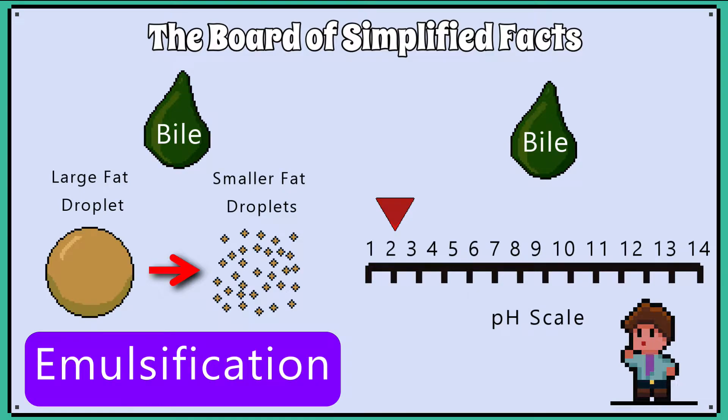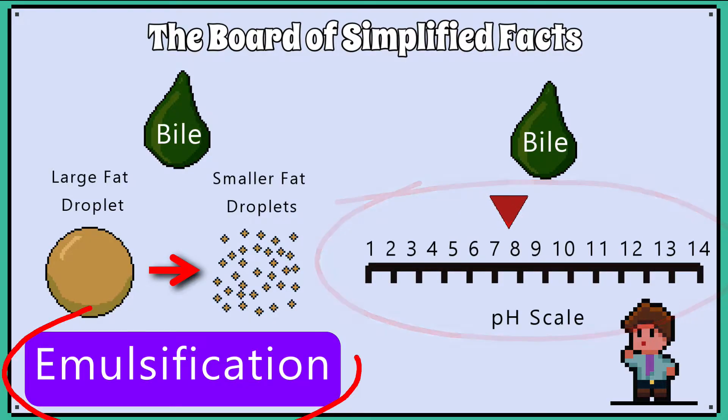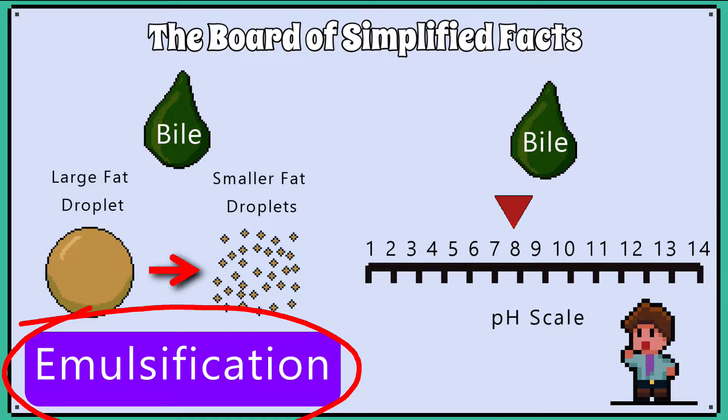Bile has two primary functions. It raises the pH of the acidic food that has just left the stomach, and it emulsifies fat.